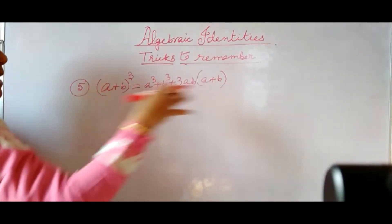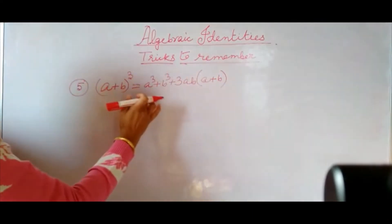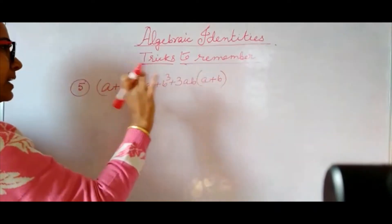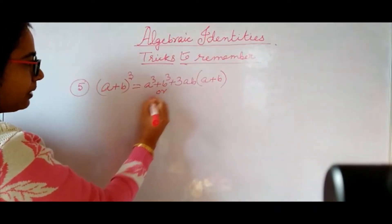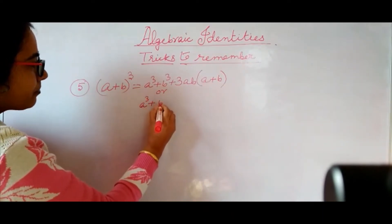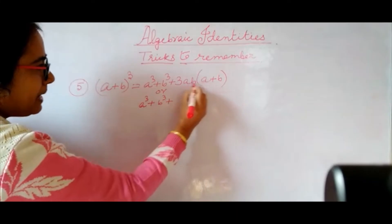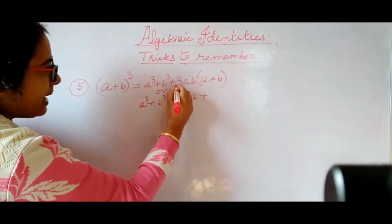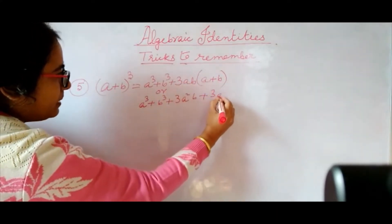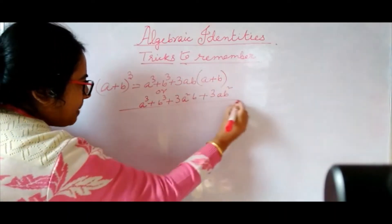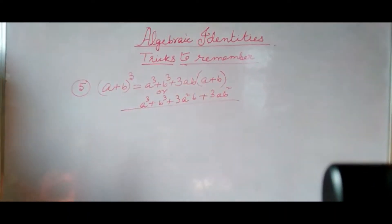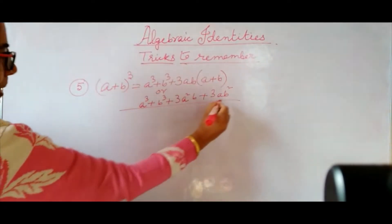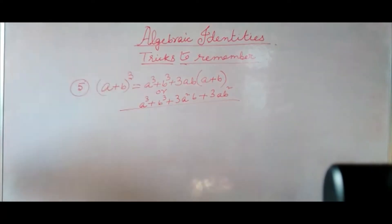Now this can also be written in expanded form. If you remember this formula — A cube plus B cube plus 3AB(A+B) — you can easily write the expanded form. Multiply 3AB into A plus B: it will be A cube plus B cube plus 3A square B plus 3AB square. This is the expanded form. Very simple. Try to remember this formula: A cube plus B cube plus — the power is 3, so 3AB in bracket A plus B.